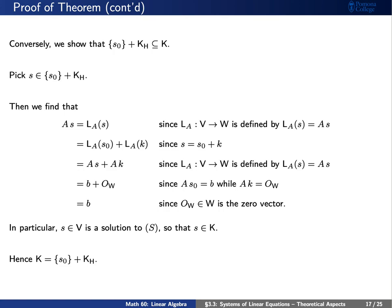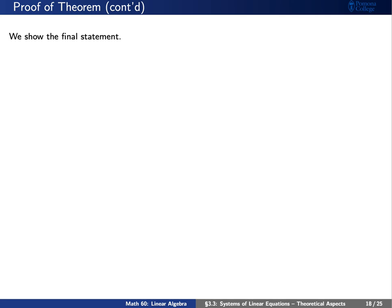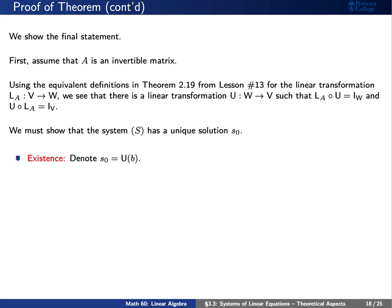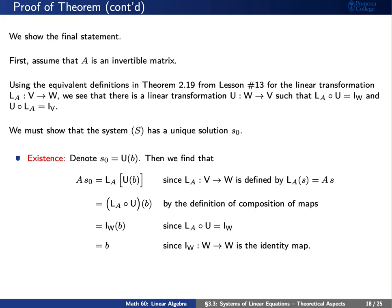Finally, for the last statement where M equals N, first assume A is invertible. This means left multiplication by A is an invertible linear transformation with inverse U. To show existence of a solution, write s zero as U of B. Applying A to s zero and using properties of the inverse U, we find A times s zero equals B, so s zero is indeed one solution to system capital S.